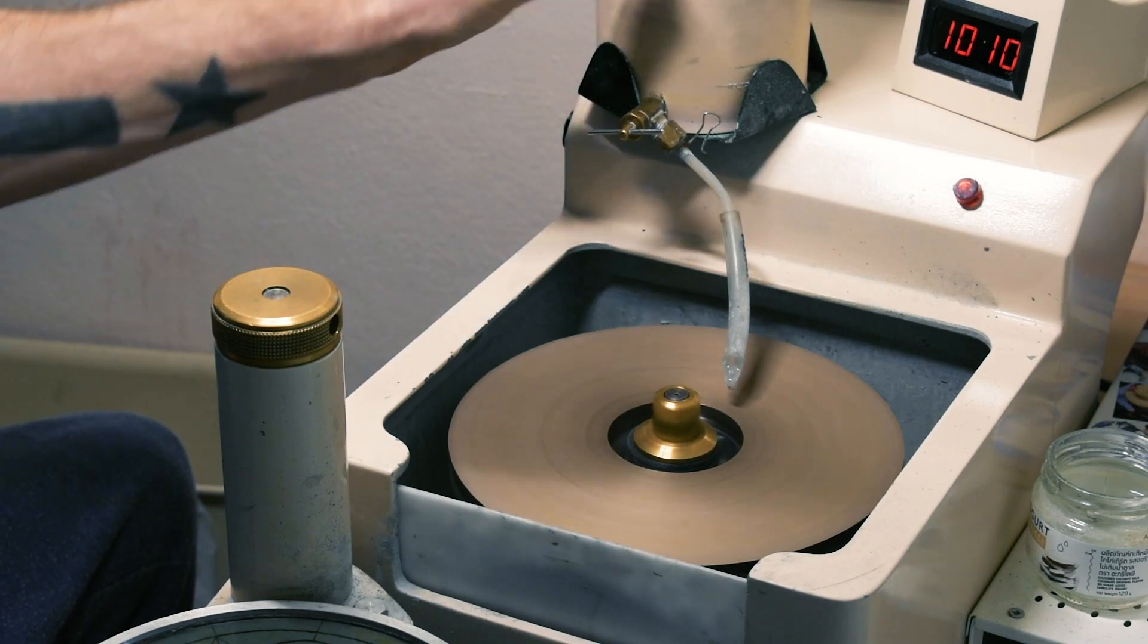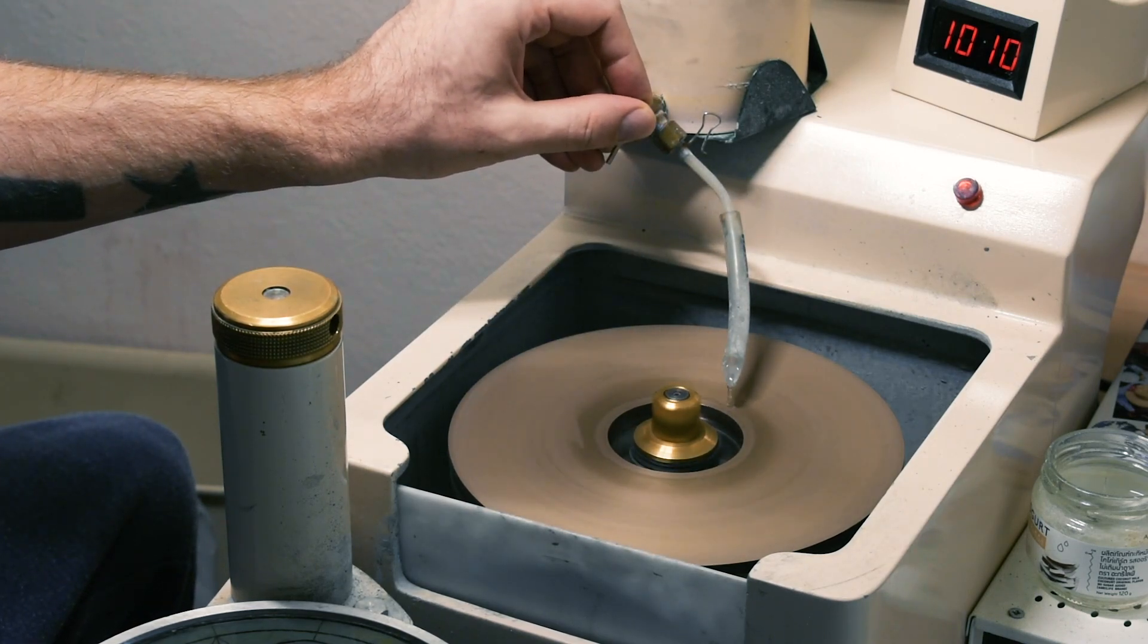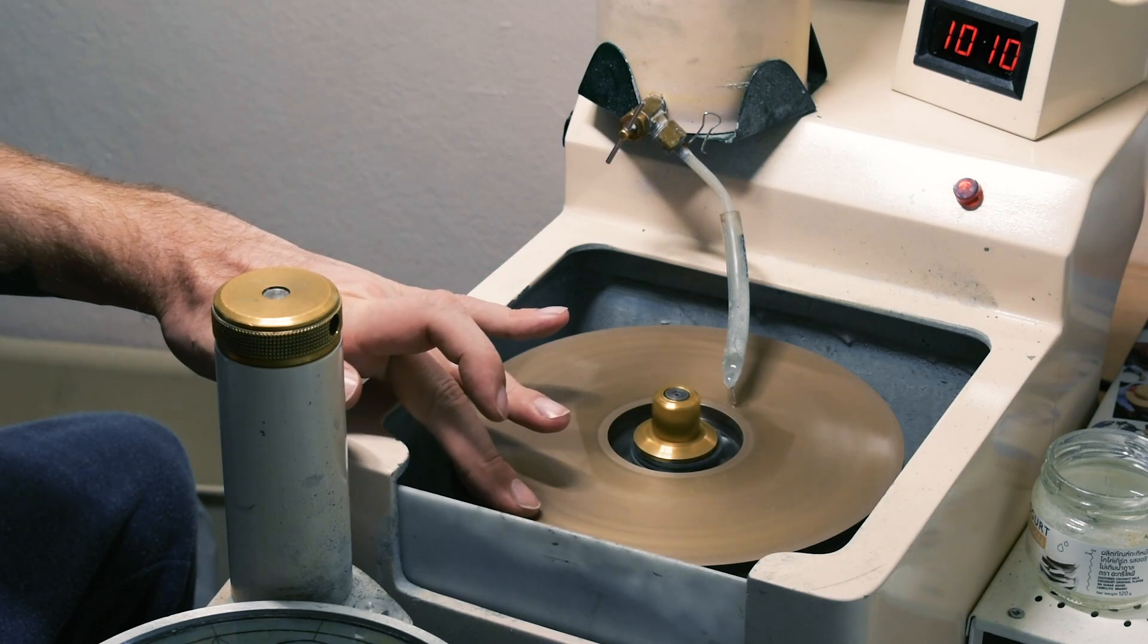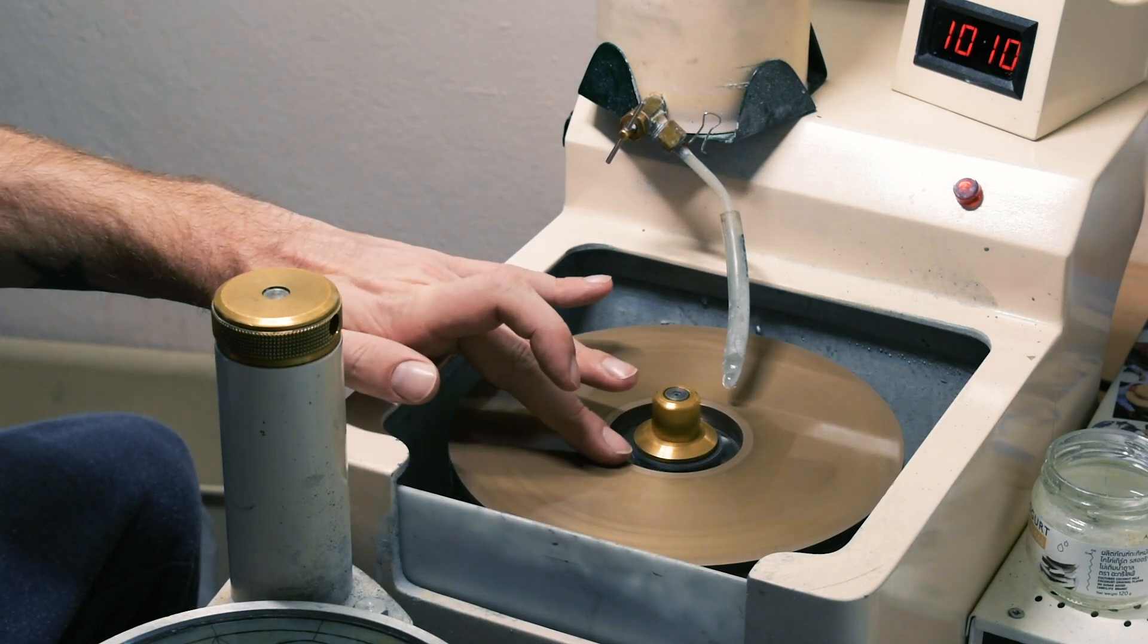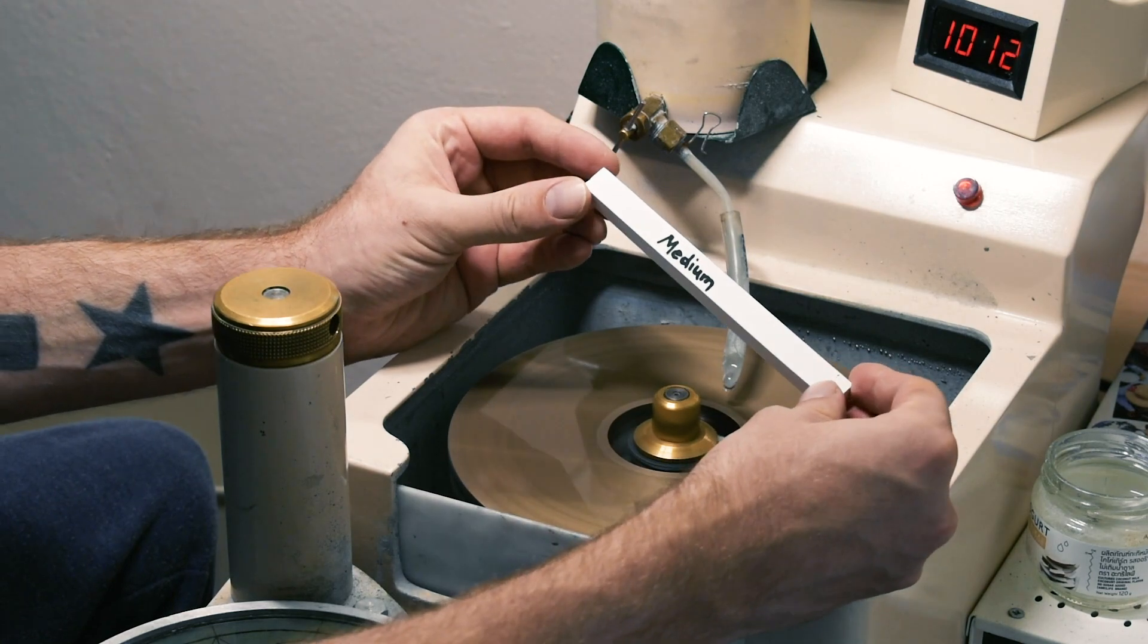First things first, we need to put our RPMs up to 1000. We need a fast water drip, and then we're going to use our dressing stick that came with the lap.